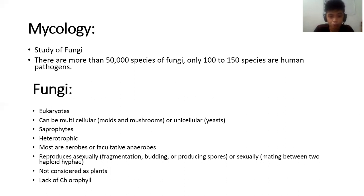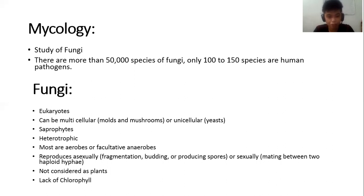In terms of reproduction, fungi can reproduce asexually or sexually. Asexual reproduction can be by fragmentation, budding, or producing spores. Sexual reproduction involves mating between two haploid hyphae. Fungi also lack chlorophyll — the green pigment in plants required to collect sunlight.